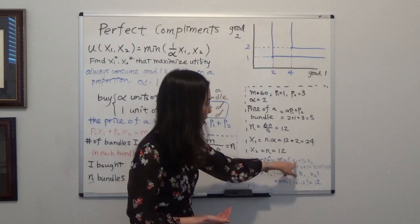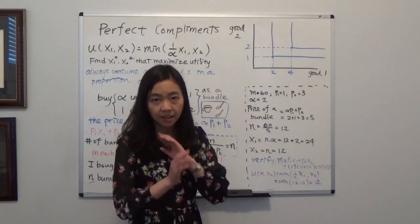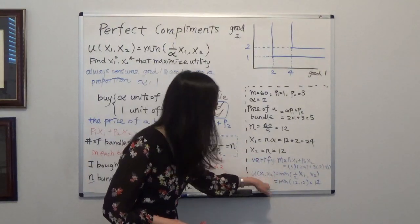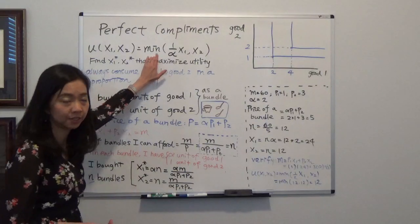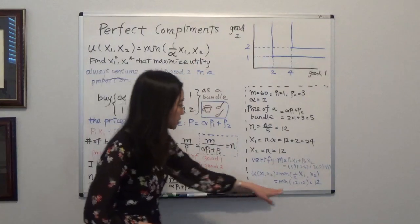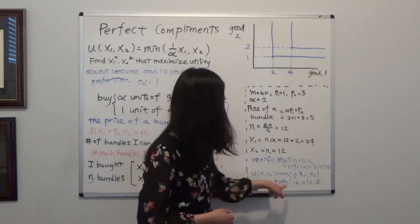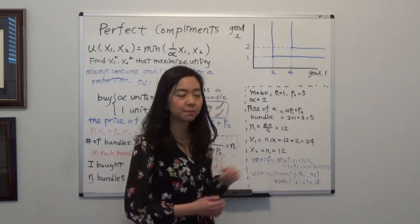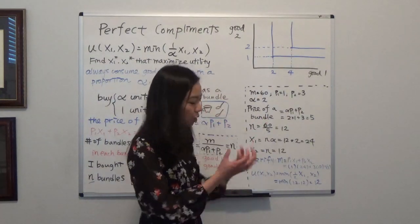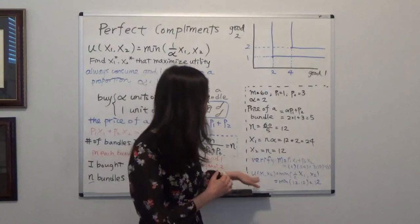That will be P1 times x1 plus P2 times x2. After you calculate that, you find it's exactly $60 — I used all my budget. And what is my level of utility? You plug it back into your utility function: minimum of (1/alpha times x1, x2), so a half times 24 is 12, and x2 is 12. The minimum of 12 and 12 is exactly 12. So you purchased 12 perfect cups of coffee — 12 bundles — and achieved a utility level of 12.